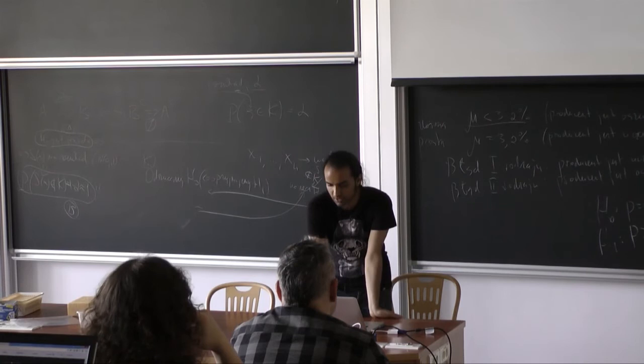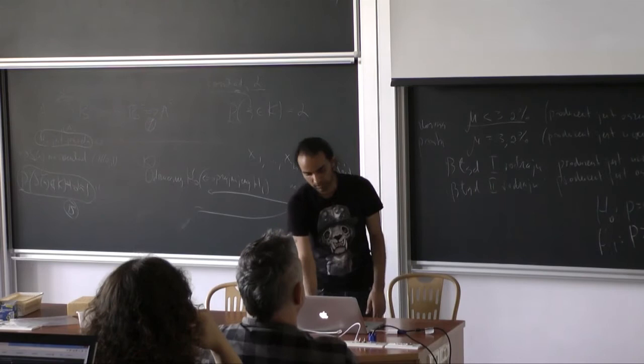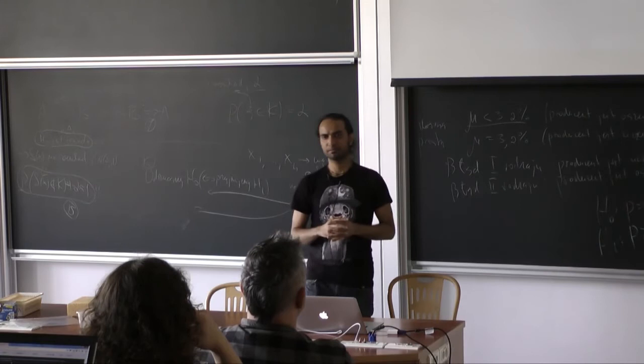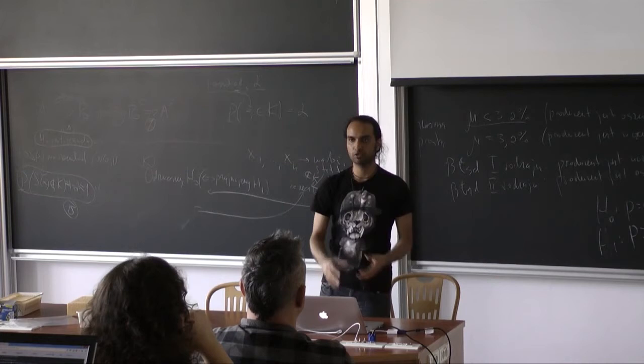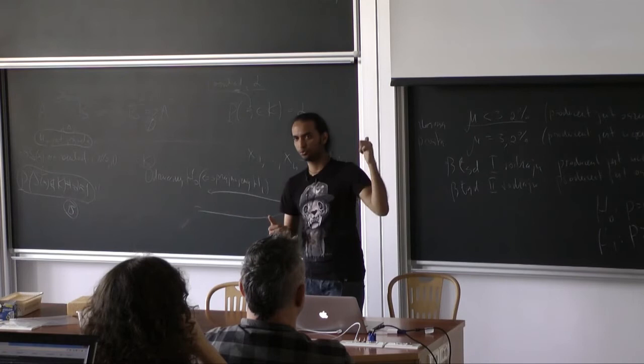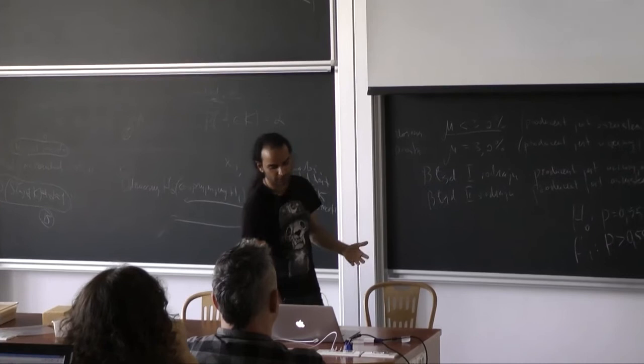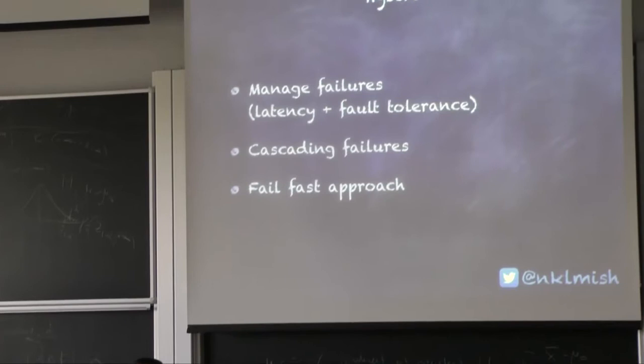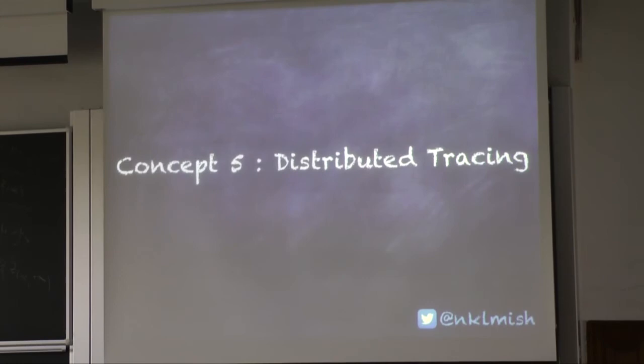The last core concept is failure management. In a distributed world there are many, many sources of failure. If you don't want to go to your boss and say it's not your fault the third-party API is down, you should use Hystrix. It has built-in support for managing failures including cascading failures, using a fail-fast approach.